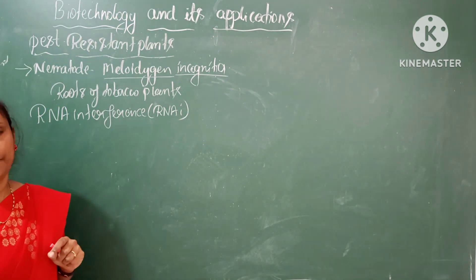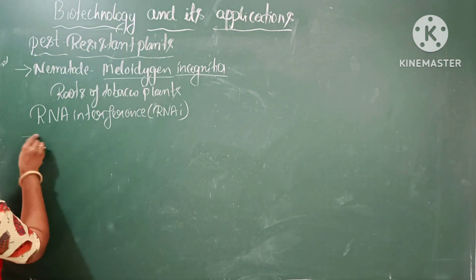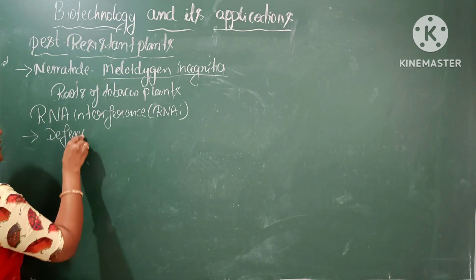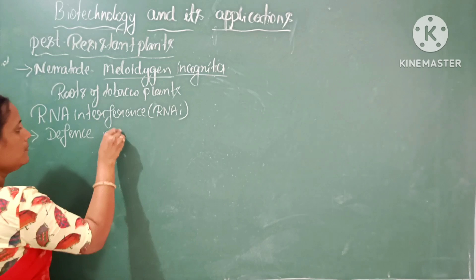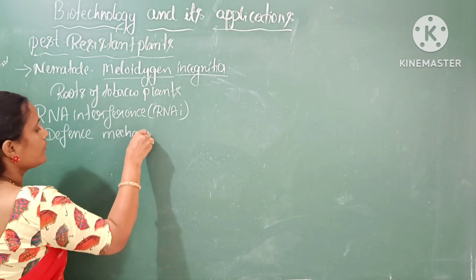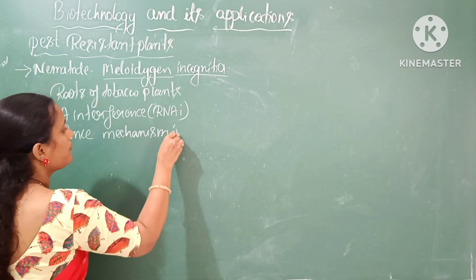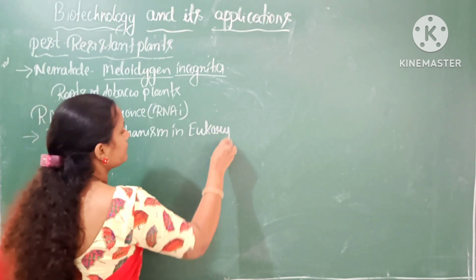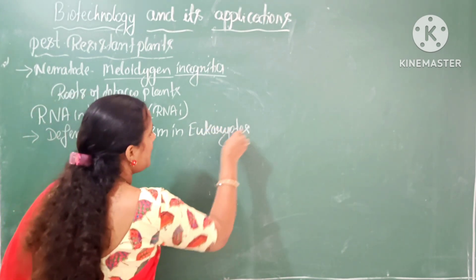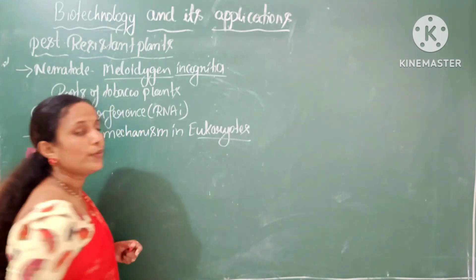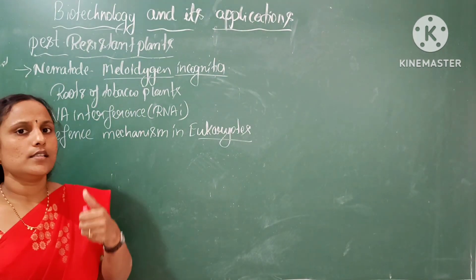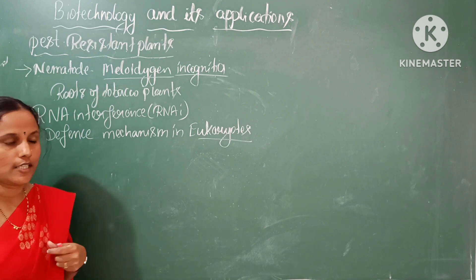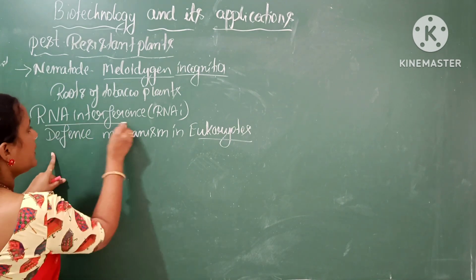RNA interference is a general defense mechanism in eukaryotes. Let us define what actually happens during RNA interference.